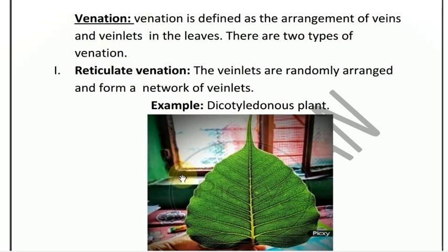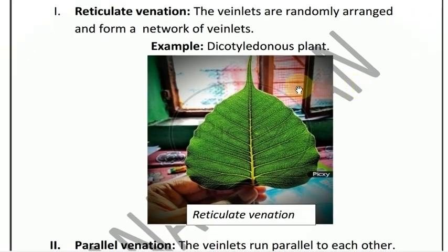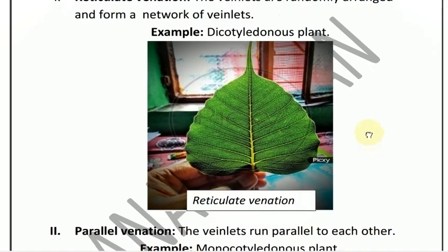Reticulate venation: the venlets are randomly arranged and form a network-like pattern. Reticulate venation is mostly found in dicotyledon plants like rose leaves.